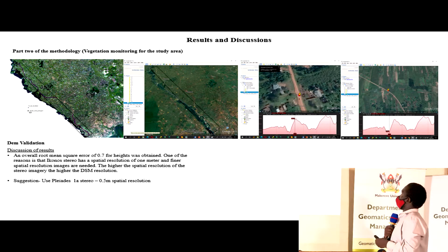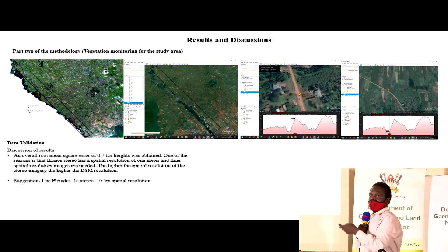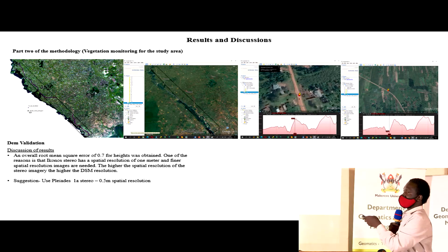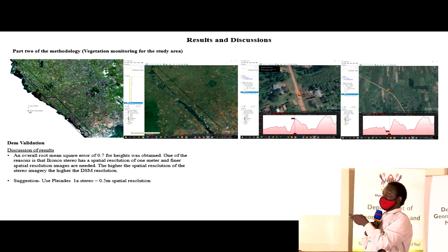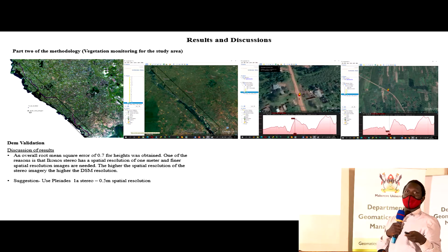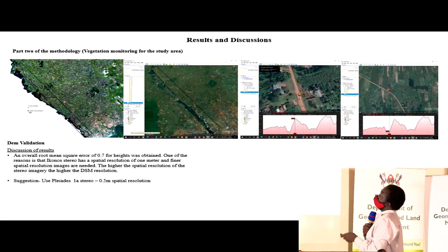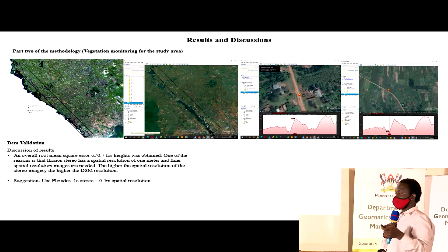When I compare height differences in the field and in the model, I find the root mean square is 70 centimeters for height. That is really high, but remember IKONOS is one meter spatial resolution, so 70 centimeters is good for IKONOS.